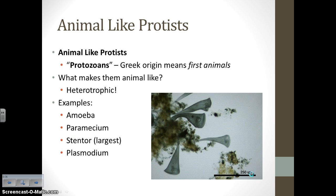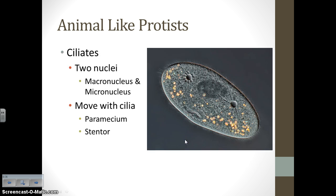Animal-like protists are also called protozoans, which from the Greek origin means 'first' or 'pre-animals' — like zoology is the study of animals. What makes them like animals is that they are heterotrophic; they must consume another organism to obtain energy and nutrition. Examples of animal-like protists include amoebas, paramecium, stentor — the largest animal-like protists — and plasmodium.